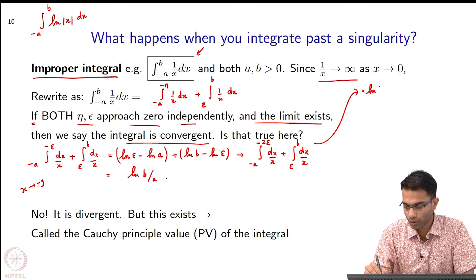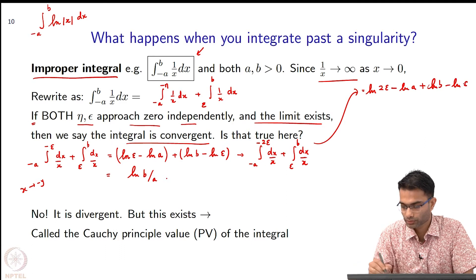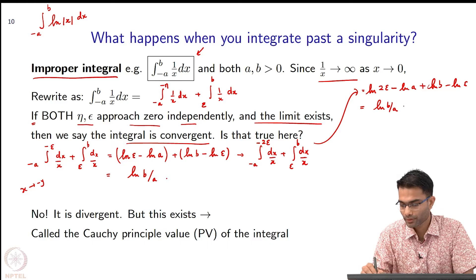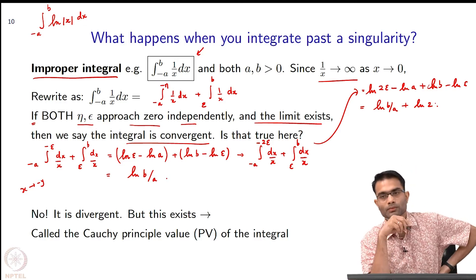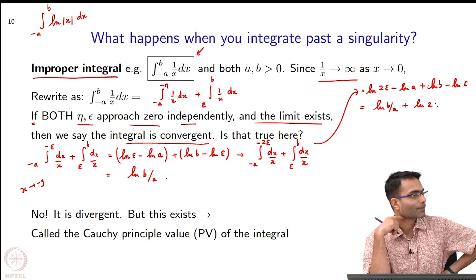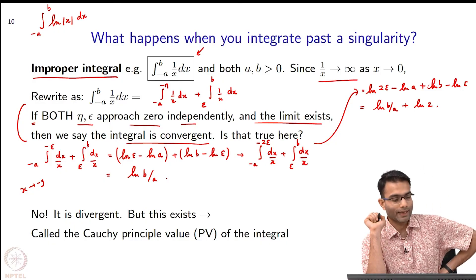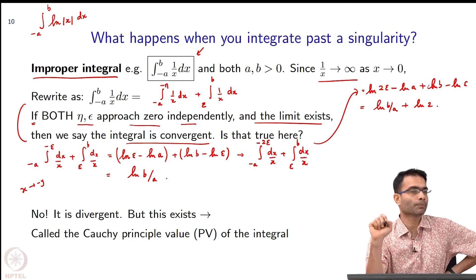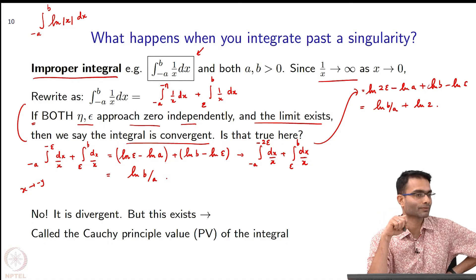I am going to get log of 2 epsilon minus log of a plus log of b minus log of epsilon. What happened? I got log of b by a plus log of 2. Now you appreciate the meaning of this definition. If both of them independently approach 0 and the limit exists, then the integral is convergent.